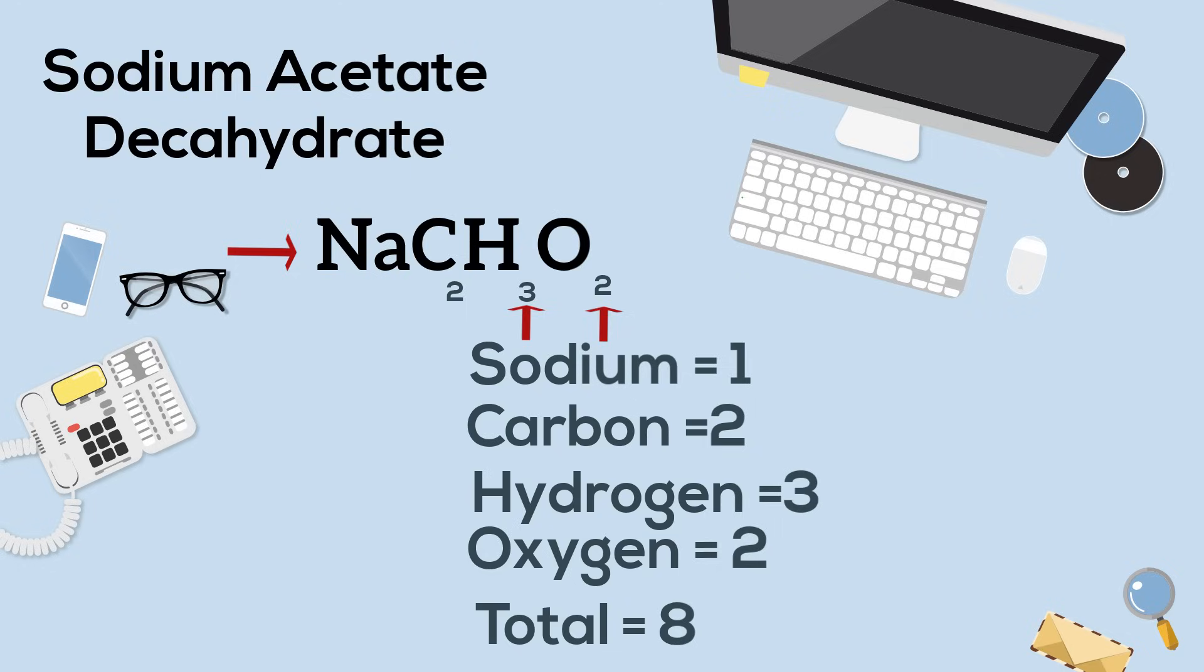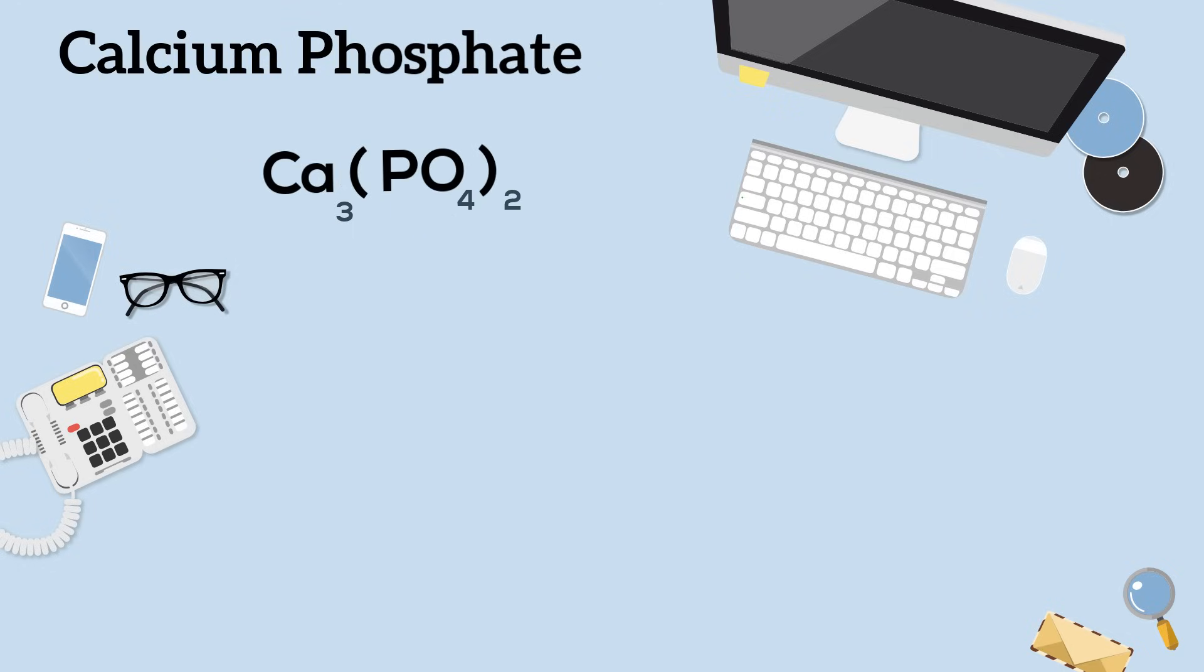Next, we have calcium phosphate. And you will notice in calcium phosphate that you have parentheses. So let's first look at the calcium.